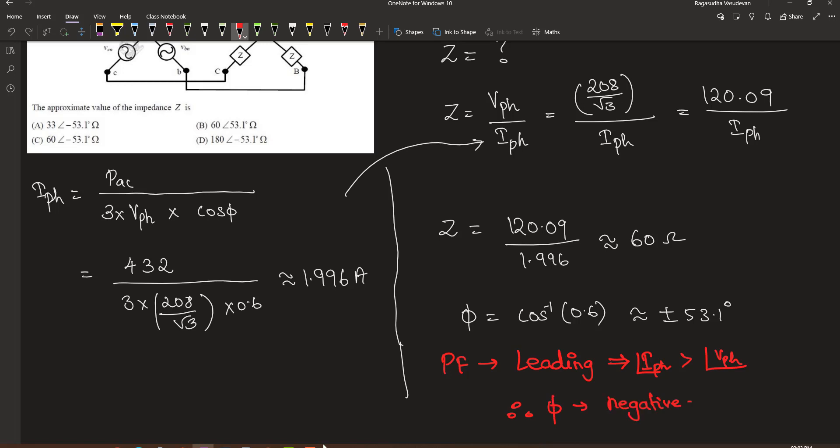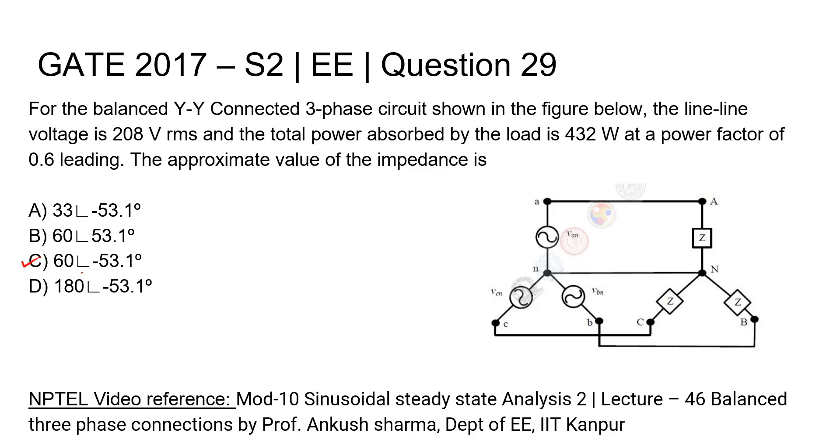So the answer is the impedance is 60 angle minus 53.1 degrees. So the answer is option C, 60 degree minus 53.1 degrees. Thank you.